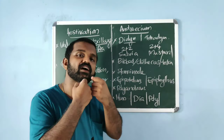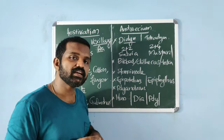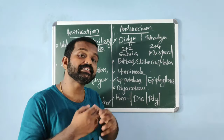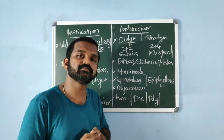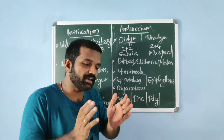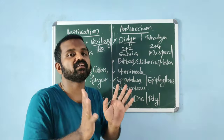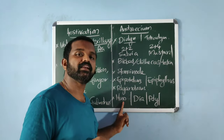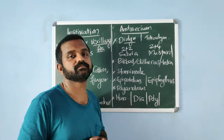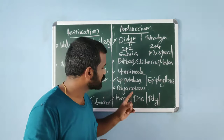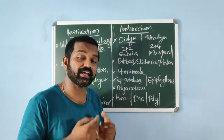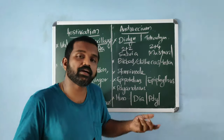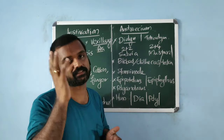Polyandrous: stamens are free from each other. If stamens are united in bundles it is termed adelphous — here filaments are fused but anthers are free. Monadelphous: stamens in a single bundle — example: China rose. Diadelphous: two bundles — example: pea. Polyadelphous: more than two bundles — example: Citrus.